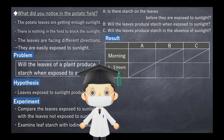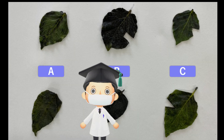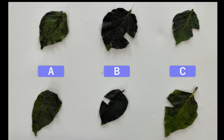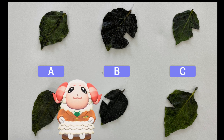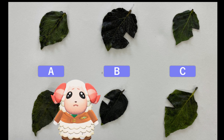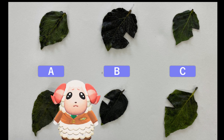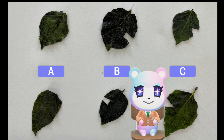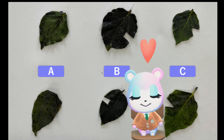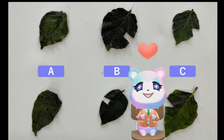Let's check the experimental results. Here are the results — only the leaves of B have changed to a blue-purple color. The leaves in A and C had no starch, but the B leaves had starch.